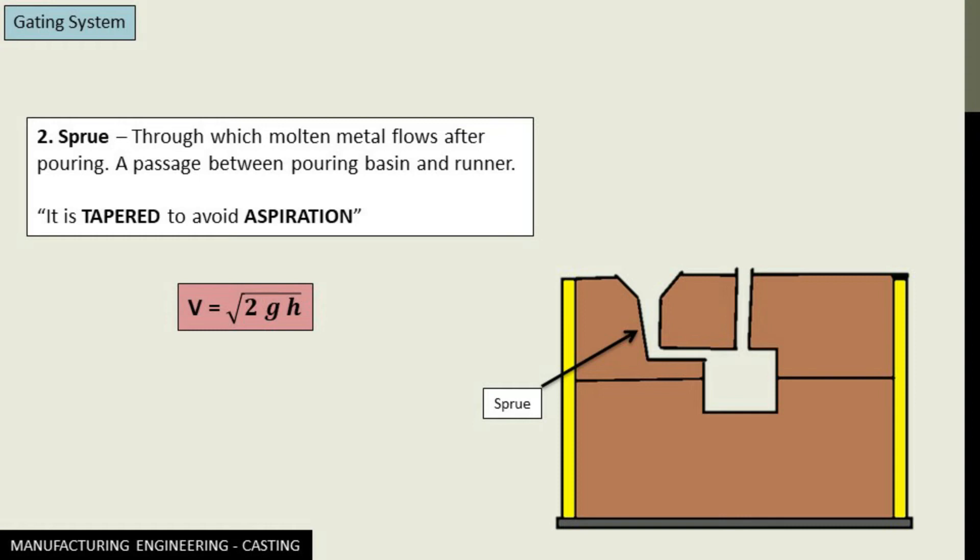Now from fluid mechanics point of view, the head of the fluid, that is the head of the molten metal in this case, the velocity of the head would be given by v = √(2gh) because the molten metal is flowing, is pouring from a height.